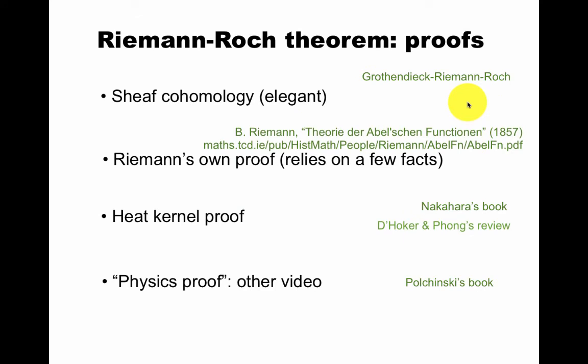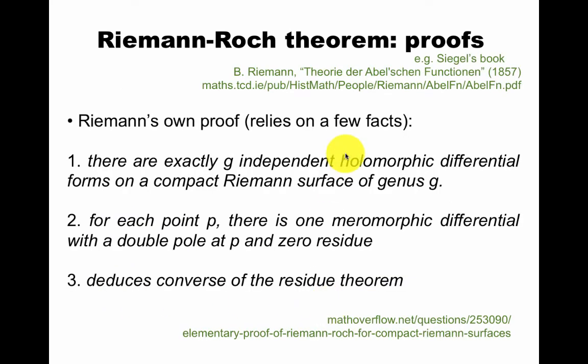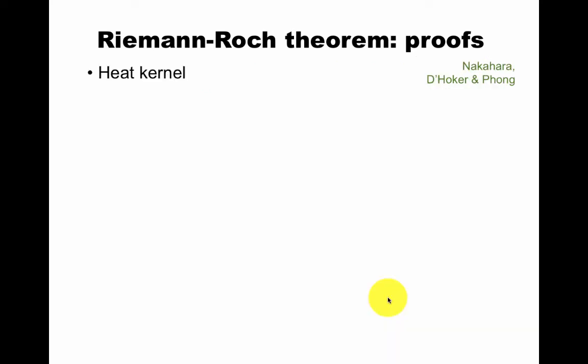Now what can you do with Riemann surfaces? One of the key theorems is Riemann-Roch. There's a beautiful proof by Atiyah-Singer that I will have no chance to go through here. Riemann's own proof I will state a few things about. And I will go through the heat kernel proof and refer to another video for a straight-up one-line physics proof. Riemann's own proof uses a few facts I won't go through. It says there are exactly g independent holomorphic differential forms on a compact Riemann surface of genus g. For each point P, there's one meromorphic differential with a double pole at P and zero residue. And then from there, you try to get something that's like a converse of the residue theorem. So that was a very broad statement. We still don't really know what the theorem says.